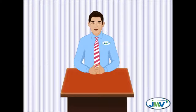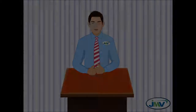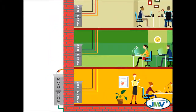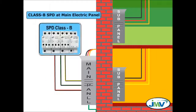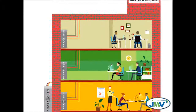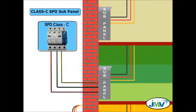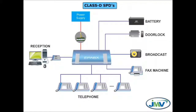To effectively protect your delicate electrical and electronic equipment, you need to install three layers of surge protection system at your office. Install Class B SPD at the main electric panel, Class C SPDs at every sub-panel, and Class D SPDs — the last line of defense against power surges — at every device outlet.